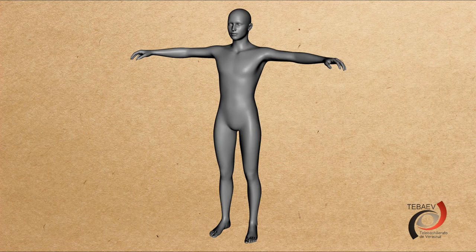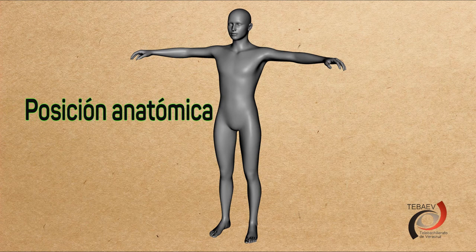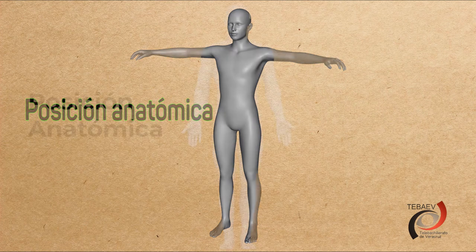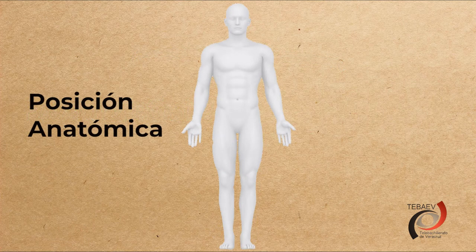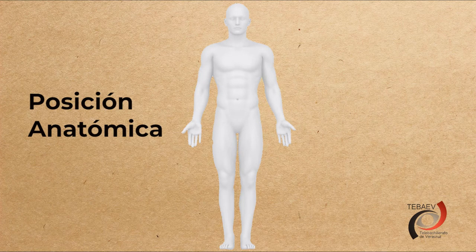Para describir los planos principales del cuerpo, usaremos la llamada posición anatómica como referencia. En esta posición, el sujeto de estudio se encuentra de frente al observador, con la cabeza erguida, los miembros superiores paralelos al tronco, las palmas de las manos hacia delante y las piernas juntas, con los pies ligeramente separados.